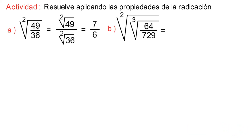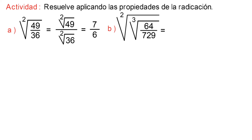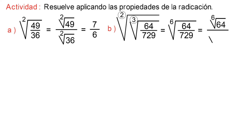Literal B: square root of the cube root of 64/729. Here we apply the property of the nth root of a root. Then, multiplying the indices, we get the sixth root of 64/729. Then, applying the property of the nth root of a rational number, we get the sixth root of 64 divided by the sixth root of 729. Calculating both roots, the final result would be 2/3.